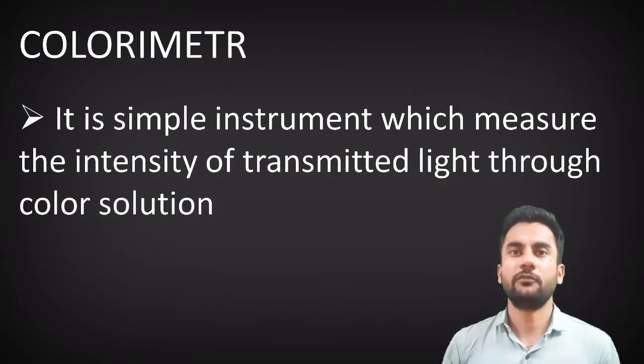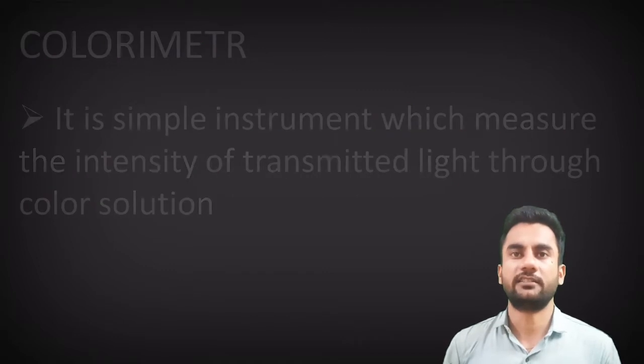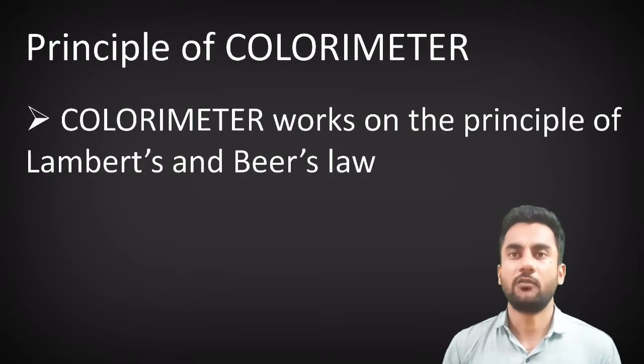Colorimeter is a simple instrument which measures the intensity of the transmitted light through the colored solution. This colorimeter works on the principle of Lambert-Beer's law.